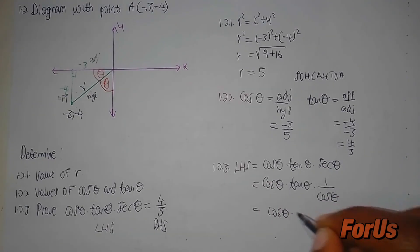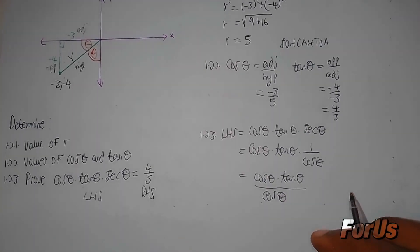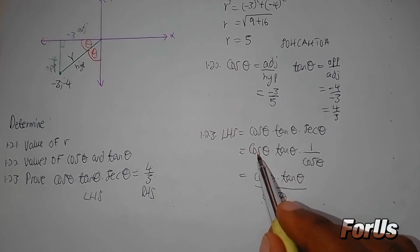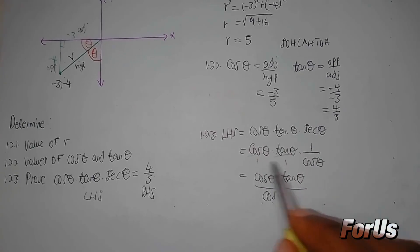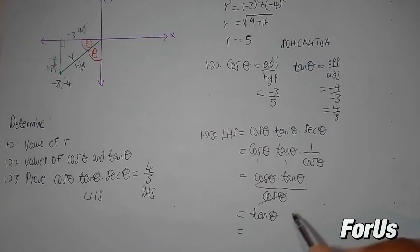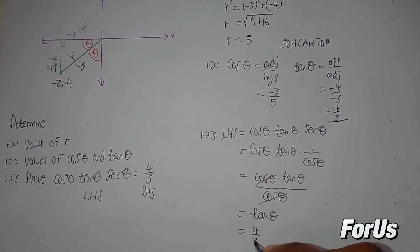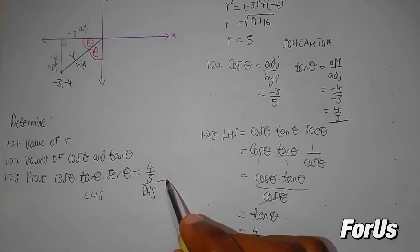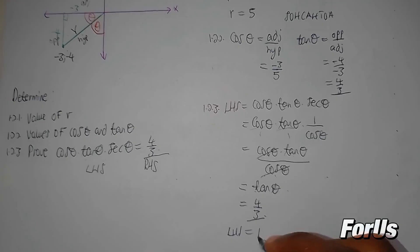Continuing the left-hand side: cos theta multiplied by tan theta multiplied by 1 over cos theta. The cos theta cancels, leaving just tan theta. Since we found that tan theta equals 4 over 3 in question 1.2.2, the left-hand side equals 4 over 3, which equals the right-hand side. Therefore the identity is proved.